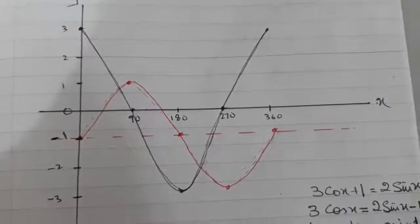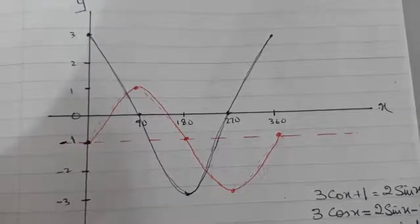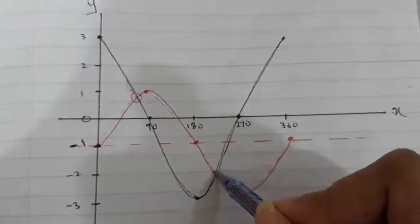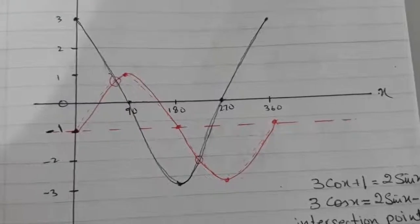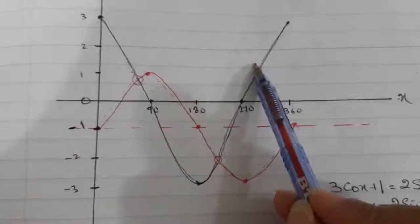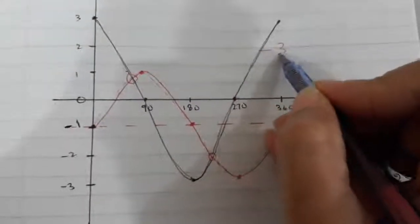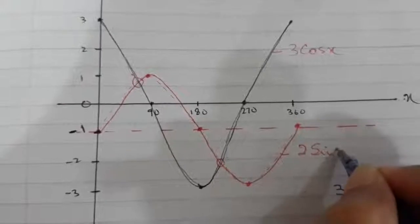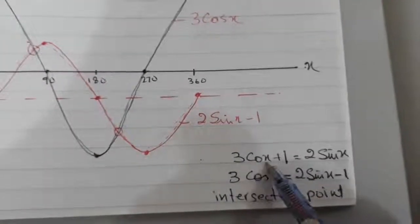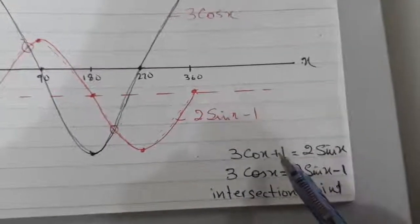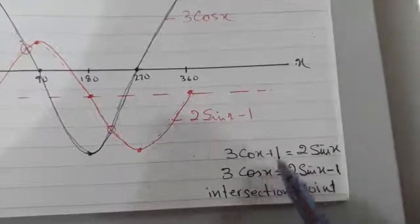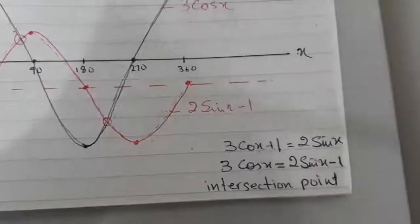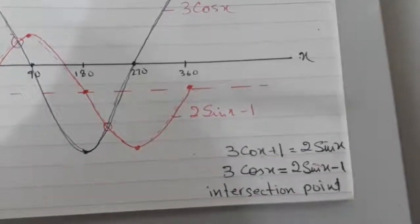Now the question asks how many solutions. Can you see at how many points the black and red curves are intersecting? Yes — two points: one here and the other here. So the number of solutions is 2. The thing is: this curve is 3cos x and this curve is 2sin x minus 1. The question says 3cos x plus 1 equals 2sin x. If we take the plus 1 to this side, it is exactly what we have sketched. That is why the intersection of these two curves represents the solutions — it has two solutions.